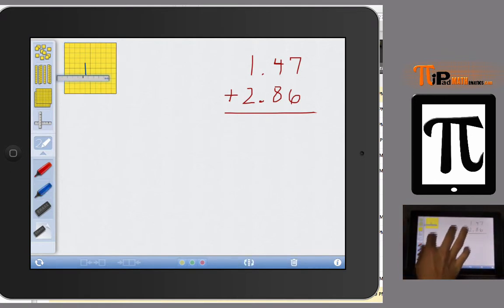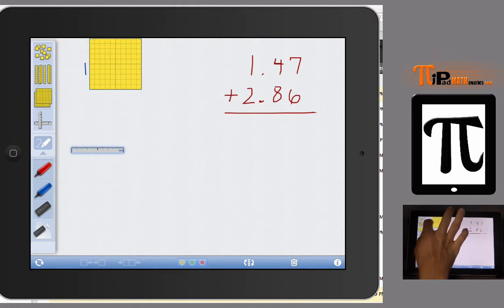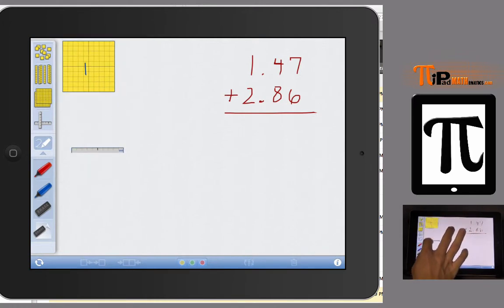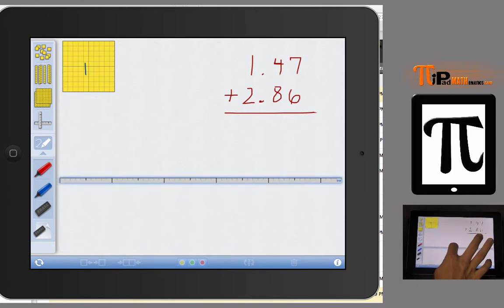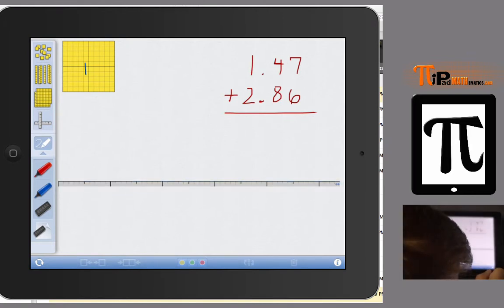I want to now model 1.47 or 1 and 47 hundredths. One reason I like this app is because it gives me this little divider. Later on when you do the video that talks about multiplication using base 10 blocks, this comes in handy to help measure the sides and the dimensions of the rectangle for an area model of multiplication. But that is another video.